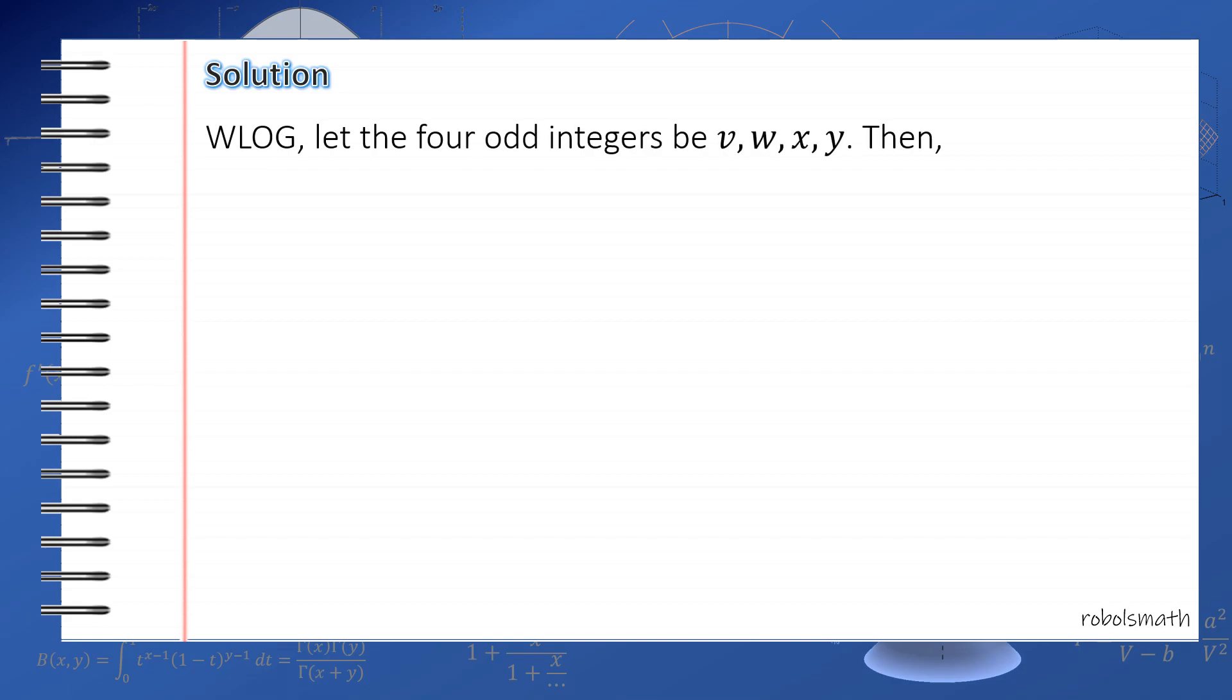So first, without loss of generality, let the four odd integers be v, w, x, and y. So meaning z is not part of the odd set. Then we use a substitution: v = 2v' + 1, w = 2w' + 1, and so on. Using this substitution, we are essentially forcing all of the variables v to y to be odd integers.